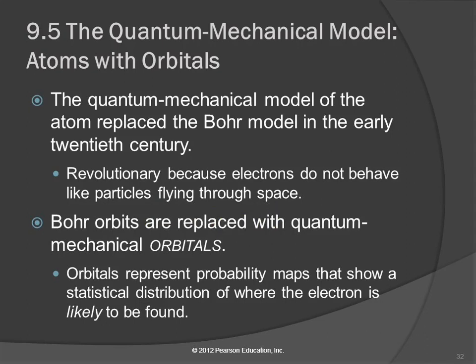There are two kinds of physics. There's Newtonian physics, named after Sir Isaac Newton — the guy who sat under the apple tree and the apple fell on his head. Newtonian physics is the physics of visible, large objects. You throw a baseball and you can predict where it's going to go — it has a trajectory and a velocity, and where it's going now predicts where it's going to be in the future. Those are things we understand.